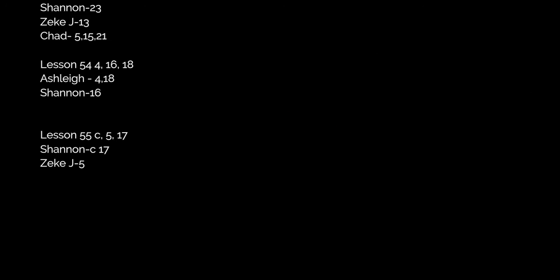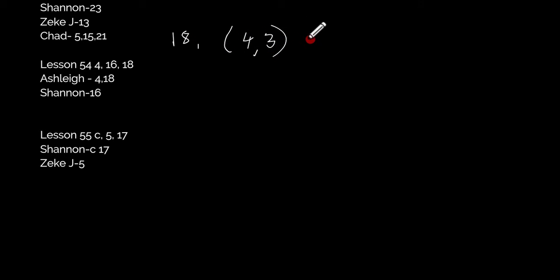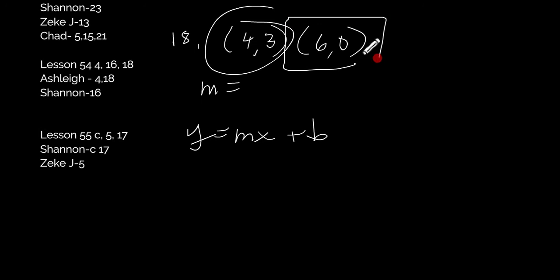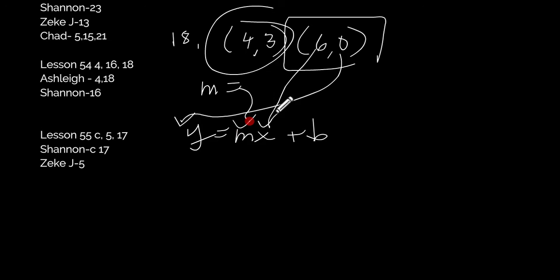Number 18 — find the equation of a line. It looks like there are points at (4, 3) and (6, 0). Find the slope using the slope formula. Then use y equals mx plus b — I'd pick (6, 0) since y is 0, making it easy. Put 0 in for y, 6 in for x, solve for b, then write the final equation with m and b filled in.